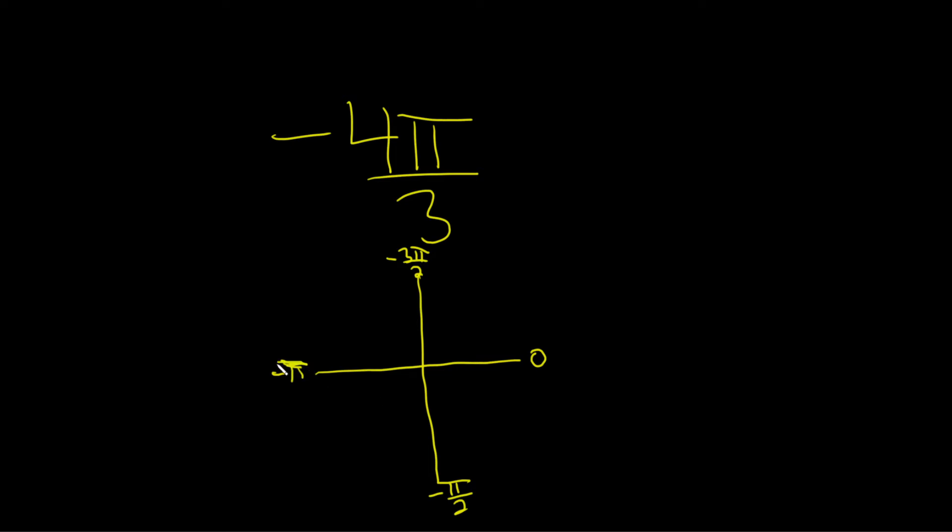So to figure out where negative 4 pi over 3 is, think of pi as 3 pi over 3. So negative pi is really negative 3 pi over 3.